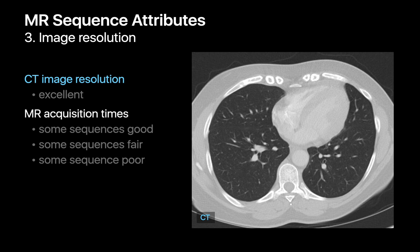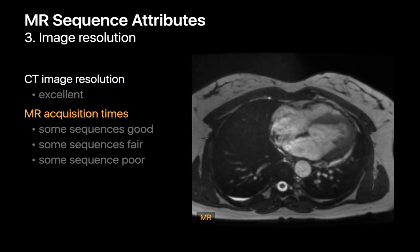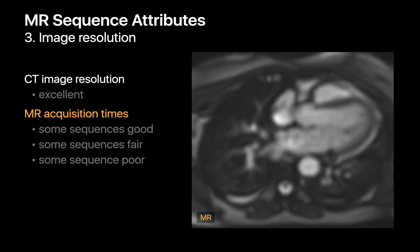Thirdly, we need to mind the resolution of the images an MRI sequence will yield. The spatial resolution of CT images is usually quite excellent and almost always better than the spatial resolution of MR images. Some MR sequences produce images that aren't too bad spatially, while others have considerably lower resolution than we're accustomed to on CT.